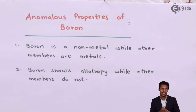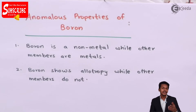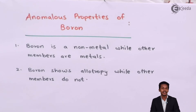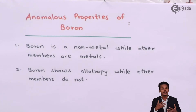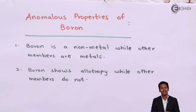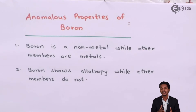The first anomalous property is that boron is a non-metal while the other members are metals. Boron has a smaller atomic size, higher electronegativity, and higher ionization enthalpy compared to the others. Metals are more electropositive, but boron is the most electronegative element in group 13, which is why it behaves as a non-metal.